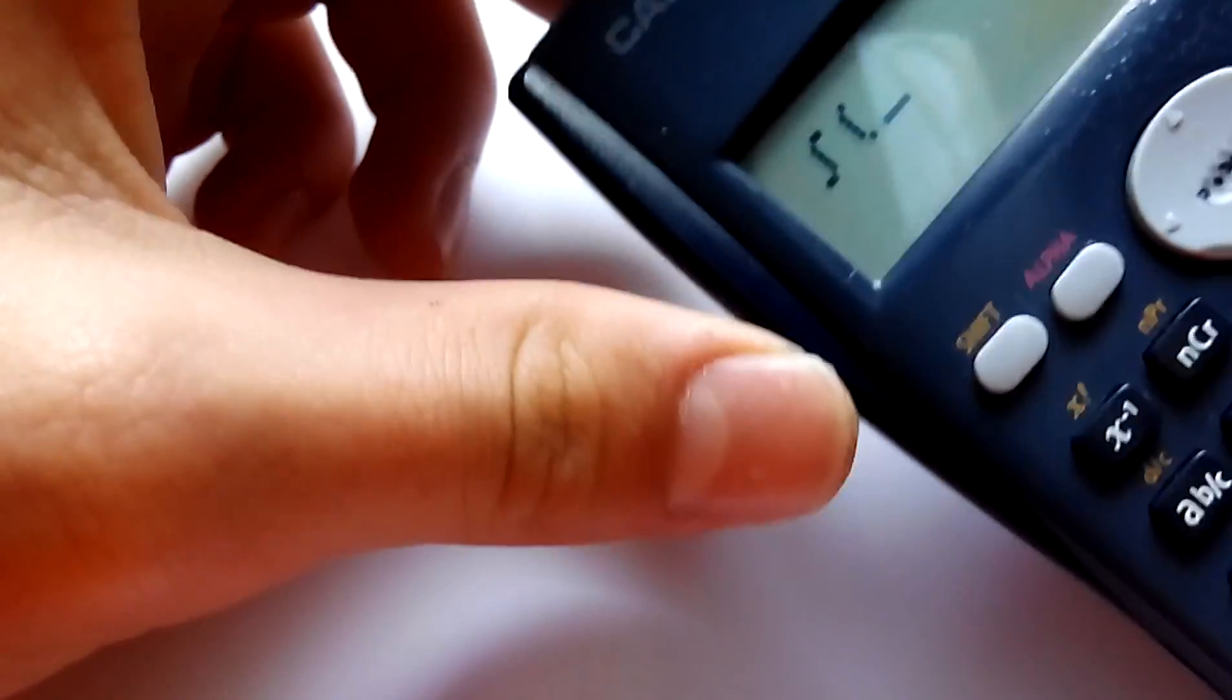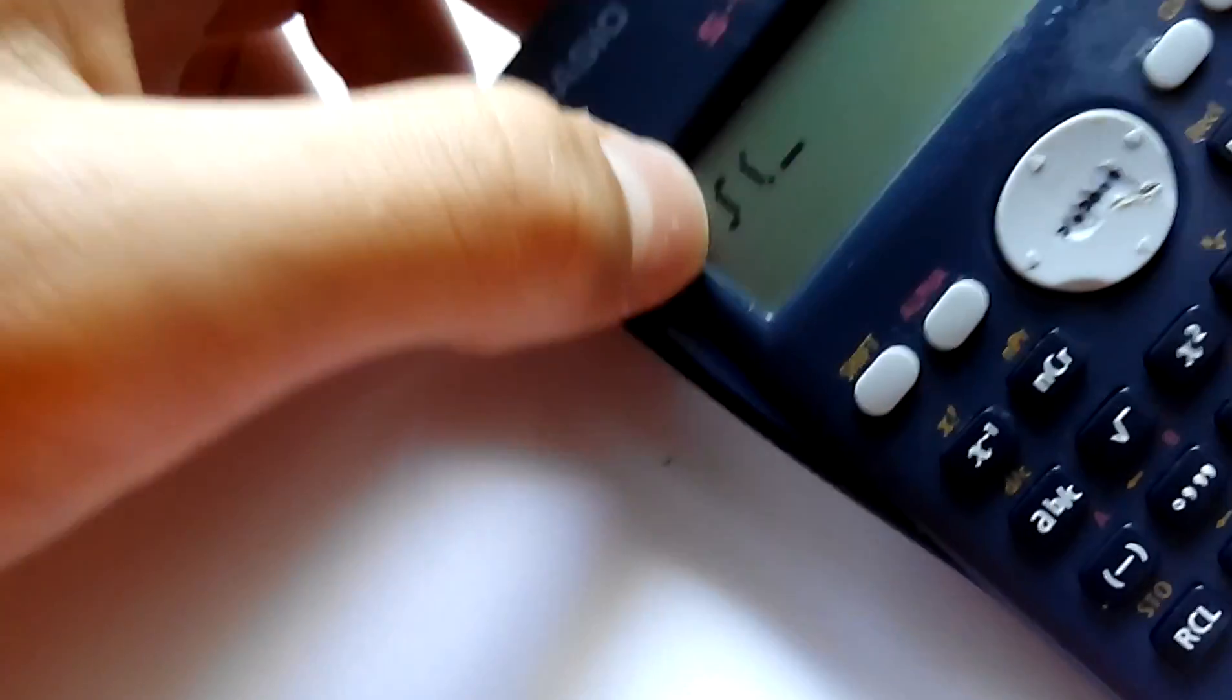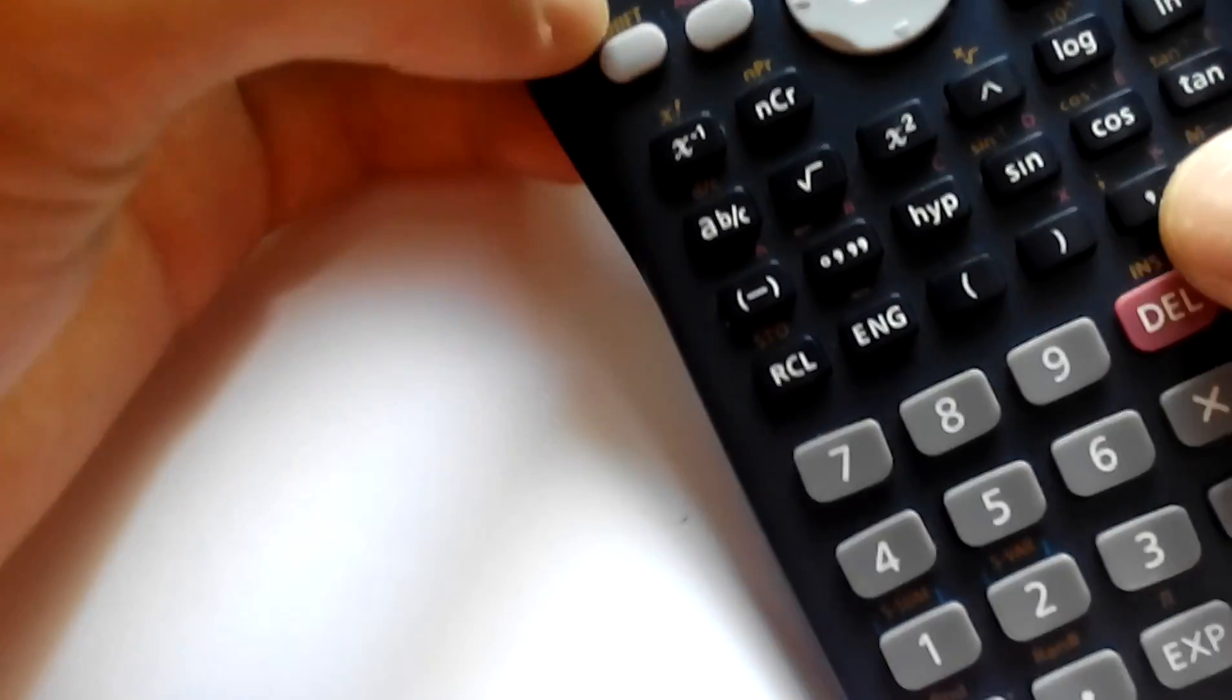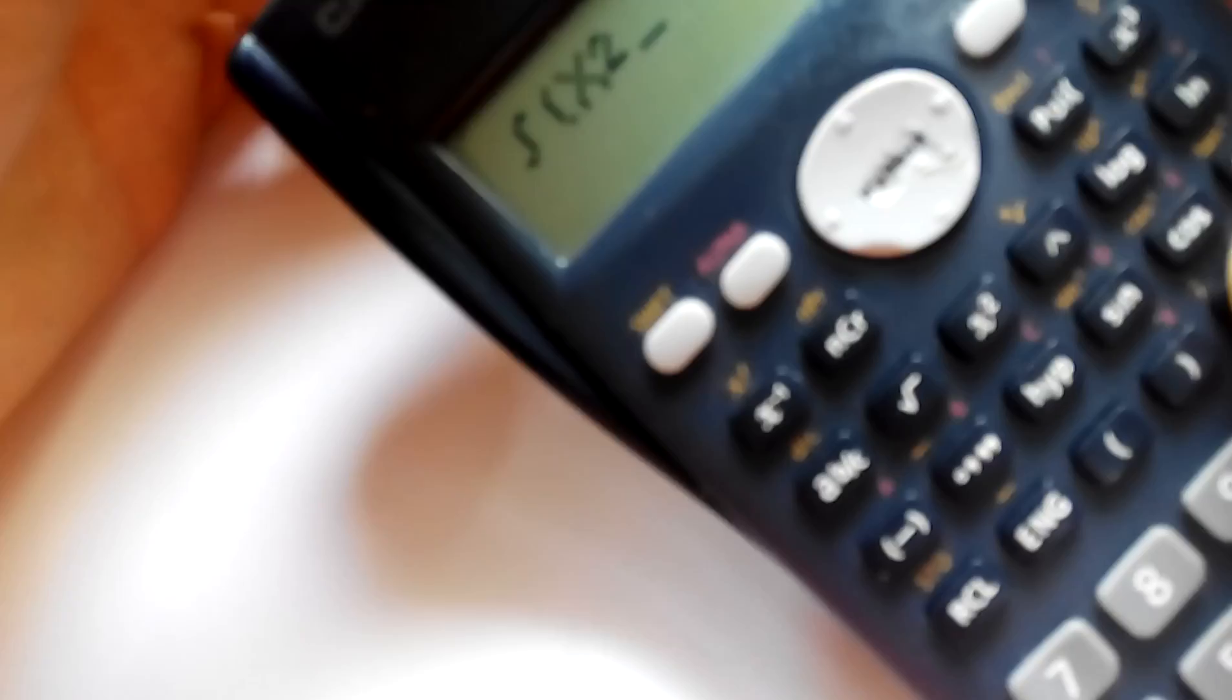It calculates integrals. So now when I press that button, it appears this symbol, integrate. So now I can put X square, for example, from 1 to 8, and close parenthesis.